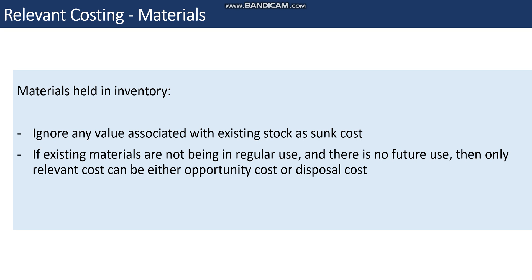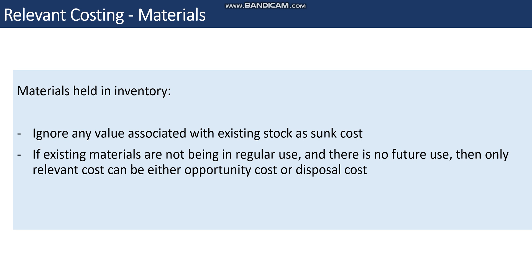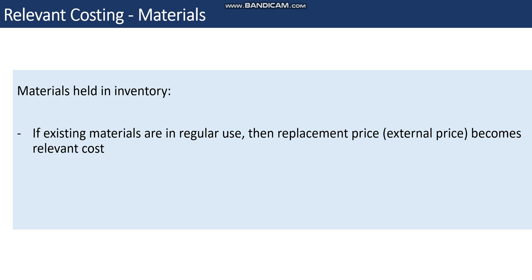Secondly, if existing materials are not in regular use — we have materials in inventory but they are not being used in other projects and there is no future use — then the relevant cost can either be the opportunity cost or the disposal/scrap reselling value of those materials. If existing materials are in regular use and we also need them for a new project, then the replacement cost or external price becomes the relevant cost.